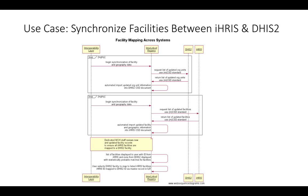As that happens, we would need a user of the interlinked registry or a dedicated app to review the facilities from DHIS-2 and IRIS for any updated facilities, to see if there are potential maps or linkages between the IRIS and DHIS-2 facility lists. We would want to use tools that provide statistically likely matches between facilities to ease that data management process.